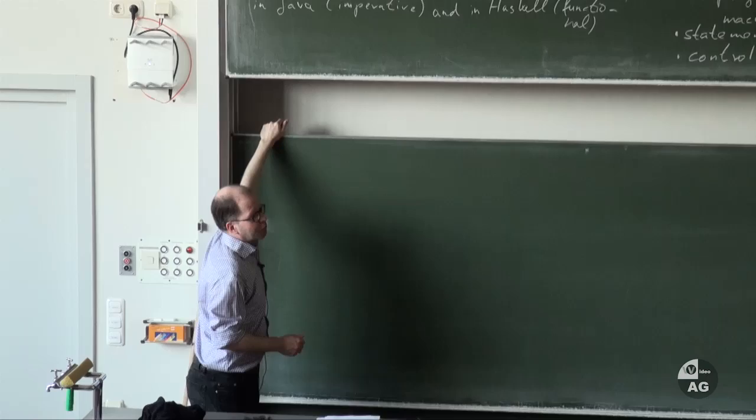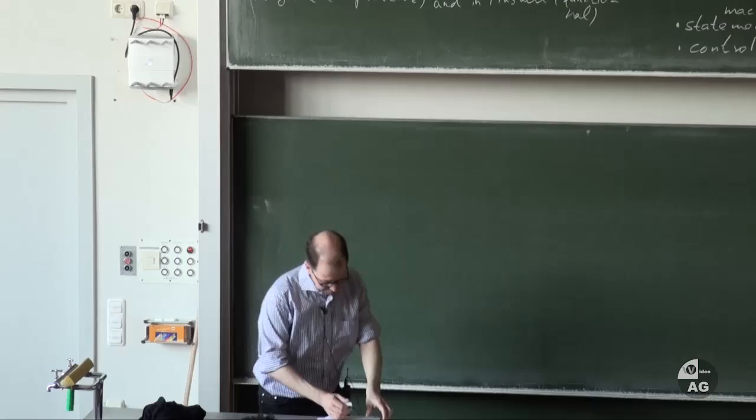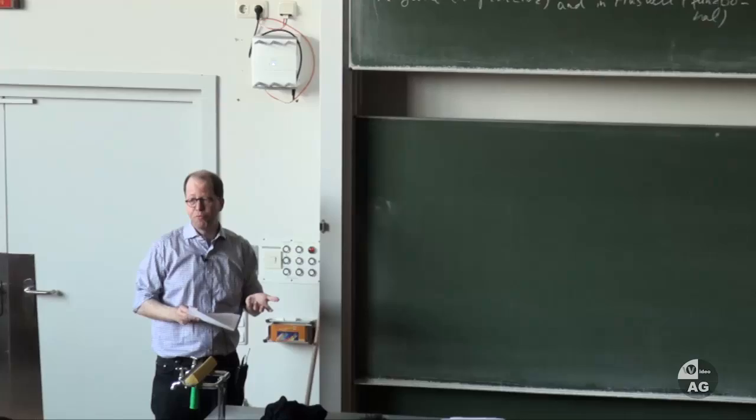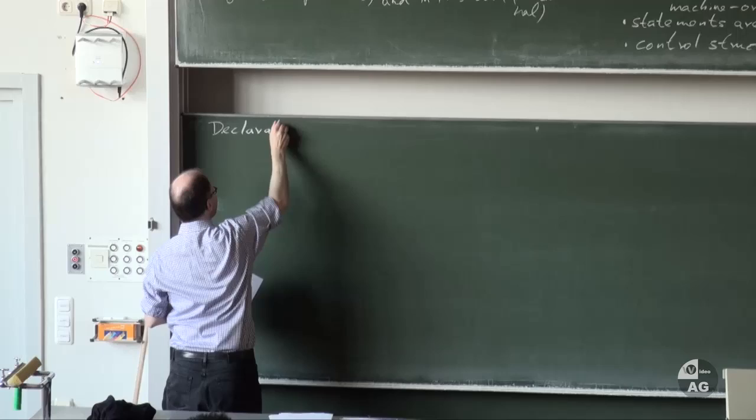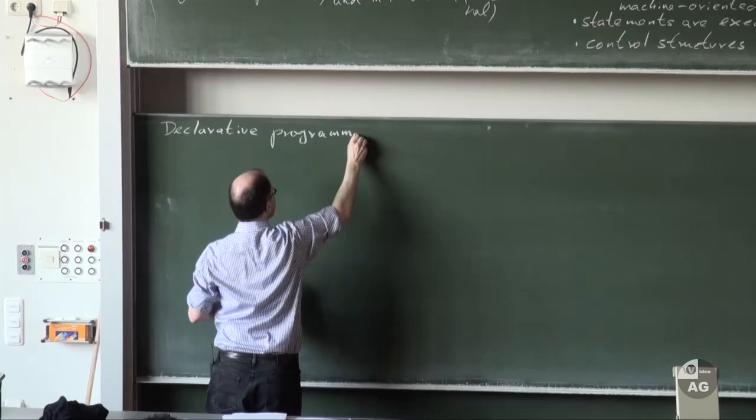Now let's solve the same problem in a functional way — let's program this algorithm again, but this time in Haskell. The idea is to do it in a declarative way: we only describe the problem, and then the solution has to be found by the computer. So to program this in a declarative way, the idea is to just describe the problem.